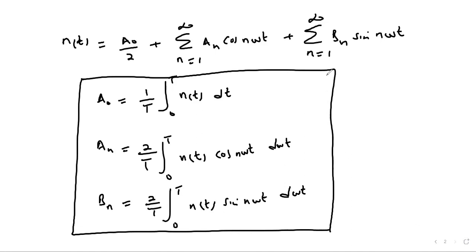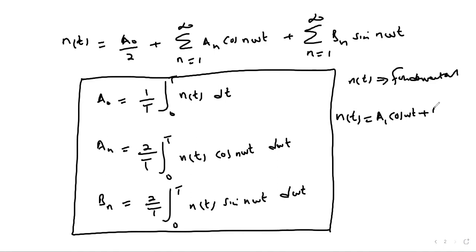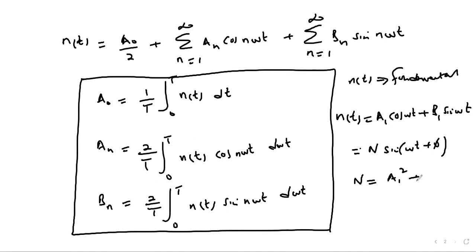Since we are only interested in the fundamental component of n(t), and because the non-linearity has odd symmetry, the constant a₀ is zero. Therefore n(t) reduces to a₁ cos(ωt) + b₁ sin(ωt). This can also be written as N sin(ωt + φ), where N = √(a₁² + b₁²) and φ = tan⁻¹(b₁/a₁).